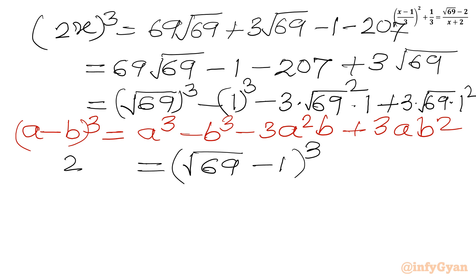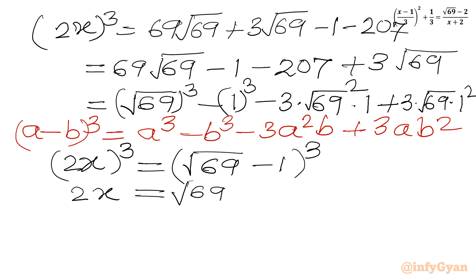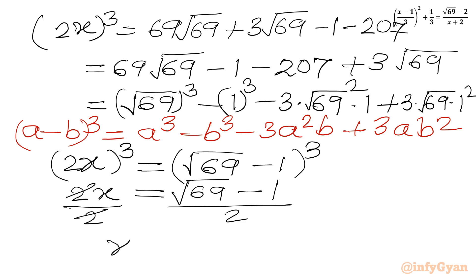The left-hand side is already (2x)³. Taking the cube root of both sides for the real value of x, we get 2x equal to √69 minus 1. Dividing both sides by 2, we obtain the answer: x equals (√69 minus 1) over 2.